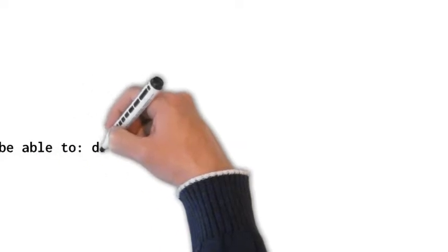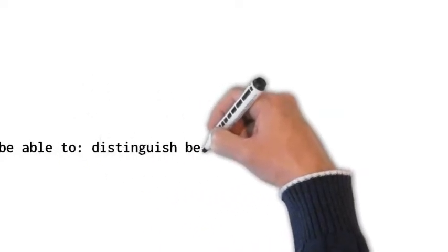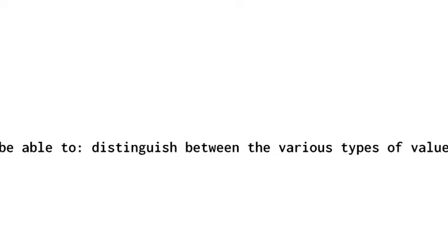Basic Appraisal Principles, Unit 5, Chapter 14, pages 394 to 395: Types of Value. Chapter 14 covers value, cost, and price. Chapter 15 covers forces that influence or affect real estate values. Learning objectives: when you have finished reading the chapter in Unit 5...